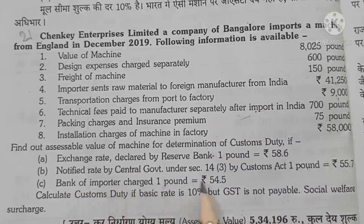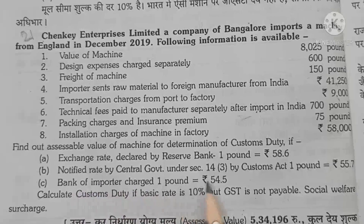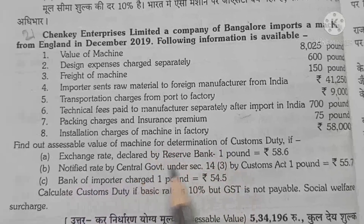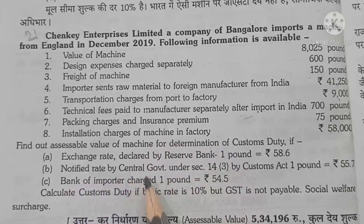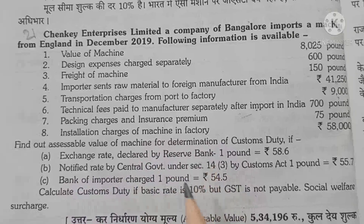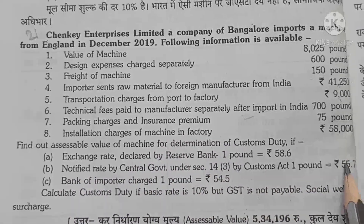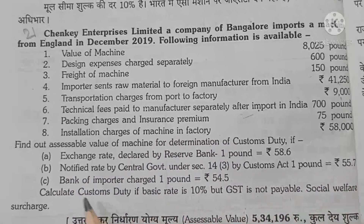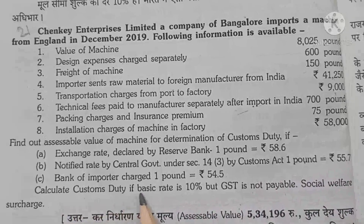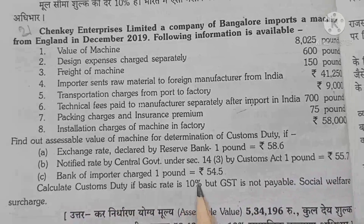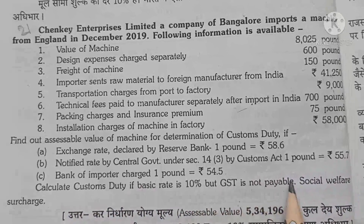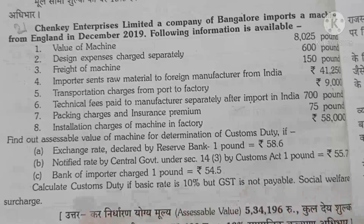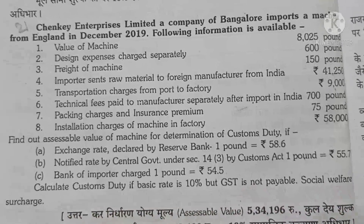Exchange rate: Reserve Bank rate is $1 = ₹58.6, Central Government rate under Customs Act is $1 = ₹55.7, and the importer's bank rate is $1 = ₹54.5. We know we calculate at the Central Government or Central Board rate, so we will use ₹55.7. Basic rate of customs duty is 10%, GST is not payable, but social welfare surcharge is applicable.